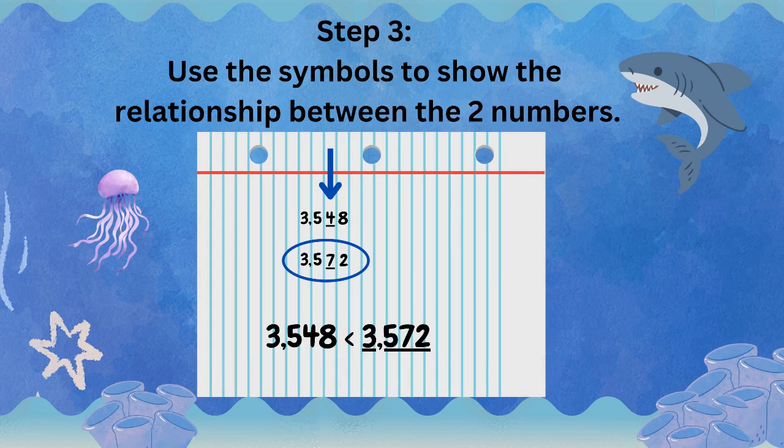Now we are ready to use the symbols to show the relationship between our two numbers. When you look at the example on the bottom, 3,548 is less than 3,572, we can see that the greatest number is being eaten since we underlined and circled 3,572.